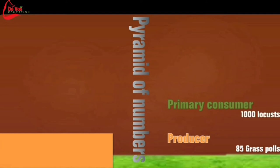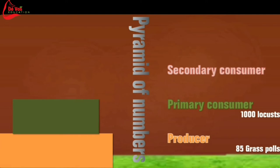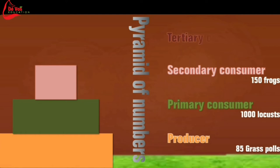However, there are some significant drawbacks to this method. There is no account taken for size — for example, one tree will count the same as one piece of grass, but it is quite obvious that a tree can sustain more life than a blade of grass. The number of individuals can be so great it can be almost impossible to count them, for example all the grass in a field. Here we see 85 grass poles sustaining a thousand locusts, which can sustain 150 frogs, which can sustain a single hawk over a year.